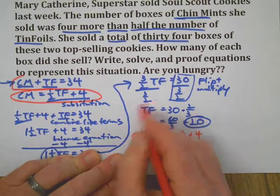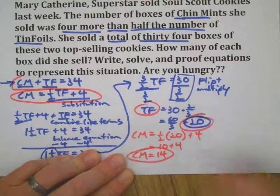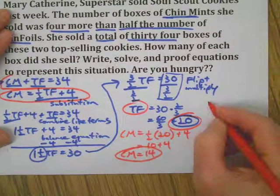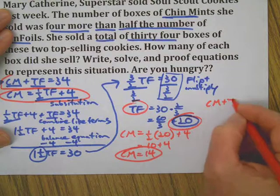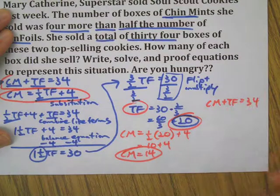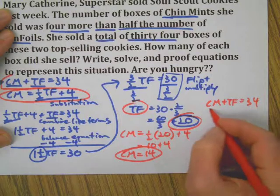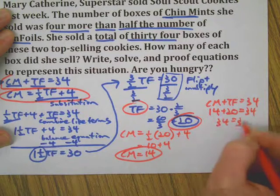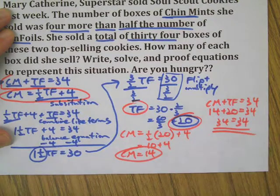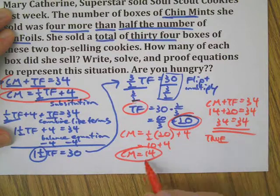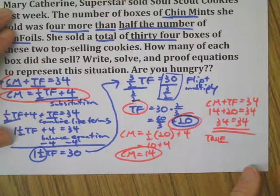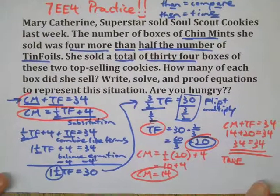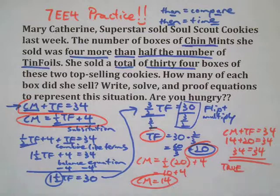And finally, we have Tin Foils and Chin Mints. Let's check it out with the final proof of our original equation — they're supposed to add up to 34. Let's take our two answers and make sure. And they do! That's called the proof. So those are the answers: 14 boxes of Chin Mints and 20 boxes of Tin Foils were sold by Mary Catherine Superstar. See you next time. Thanks for watching.